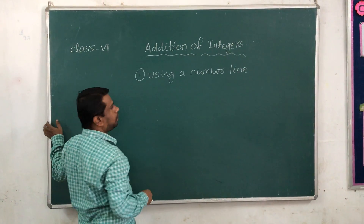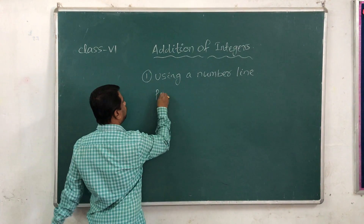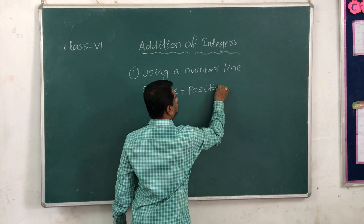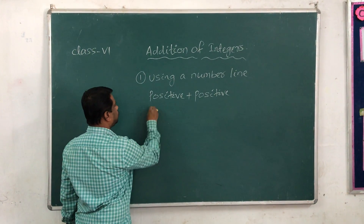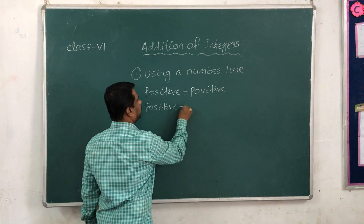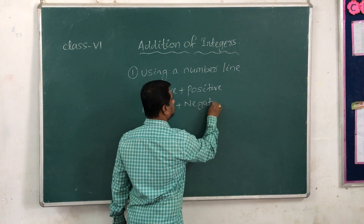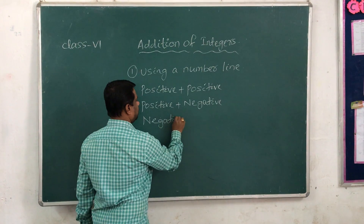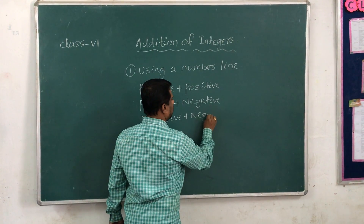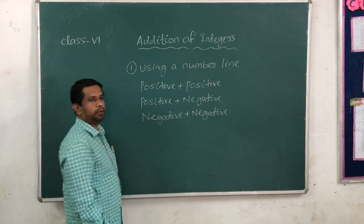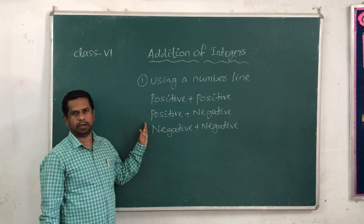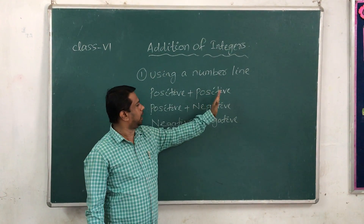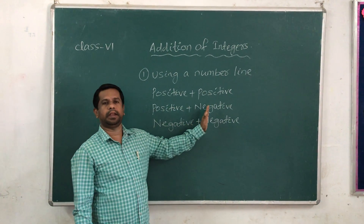There will be three types of addition. One will be positive integer plus positive integer. Then positive plus negative integer. Then negative plus negative integer. So we will have these three types of addition of integers.